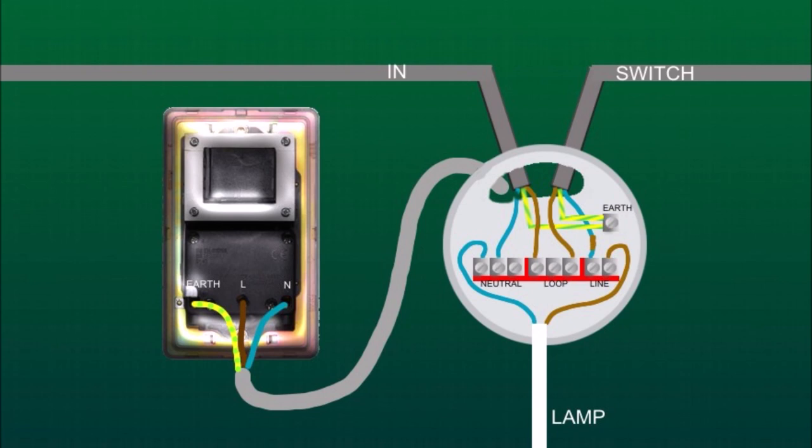At the ceiling rose we've got four terminals: earth, neutral, loop and line. So earth wire goes to E terminal, a brown wire goes to the loop and a blue wire goes to the neutral.